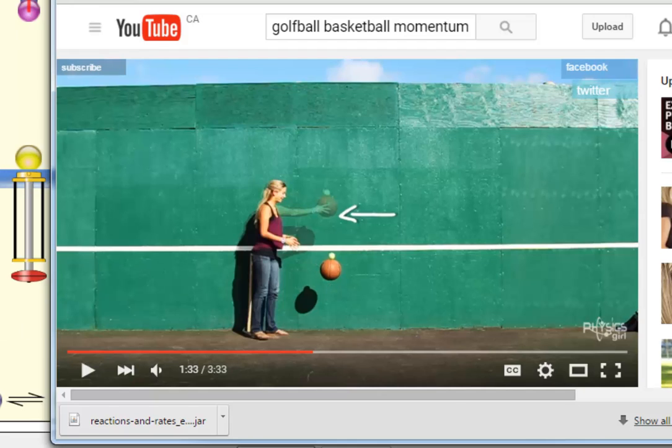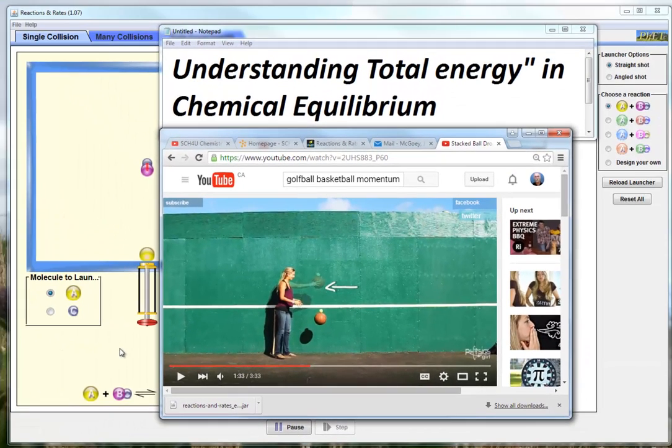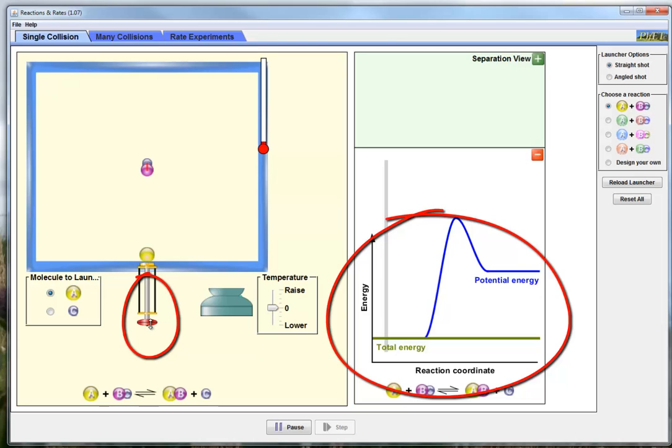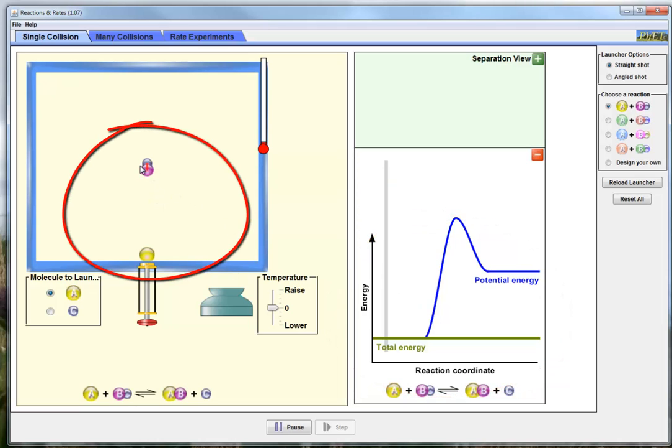So now we're going to switch over to the PhET simulation. We're going to see the same idea right in here. So we've seen this before. We know that if we pull on the red lever, we're going to increase the total amount of energy.